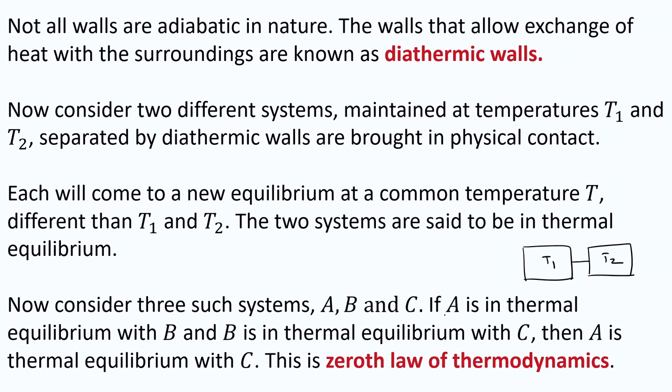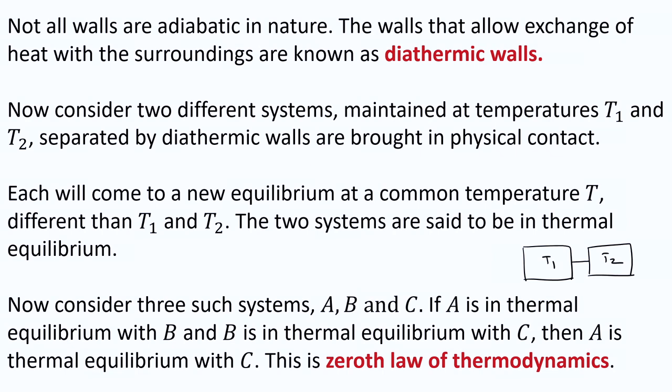Now consider three such systems A, B, and C. It is easy to see that if A is in thermal equilibrium with B, and B is in thermal equilibrium with C, then A is in thermal equilibrium with C. This is known as the zeroth law of thermodynamics. It sounds very trivial, but in the early days when the subject was in its nascent stage, even this received a formal name. It simply says that systems in mutual thermal equilibrium maintain a common temperature when connected through heat-exchanging contact.